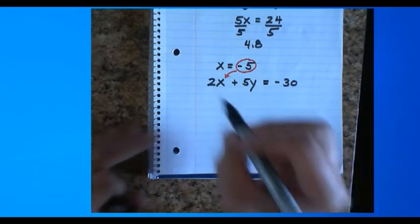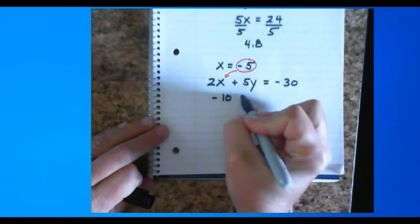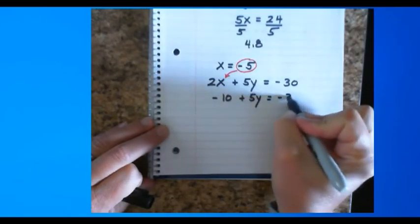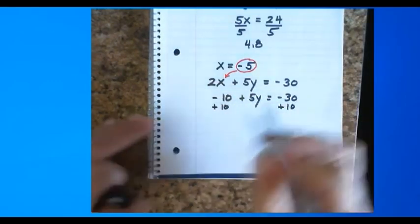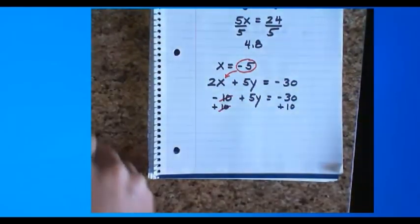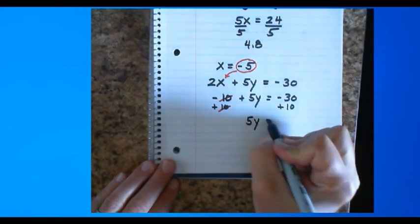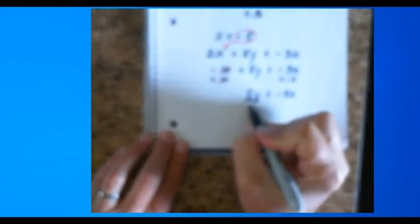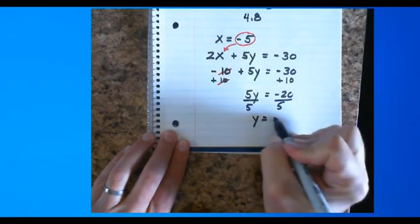Let's plug it in. 2 times negative 5 is negative 10. Plus 5y equals negative 30. Adding 10 to both sides. Red marker of death and destruction. 5y equals negative 20. Dividing both sides by 5. Y equals negative 4.